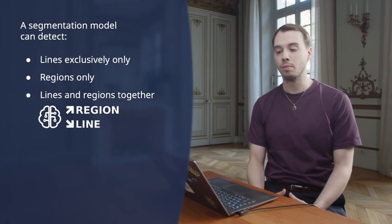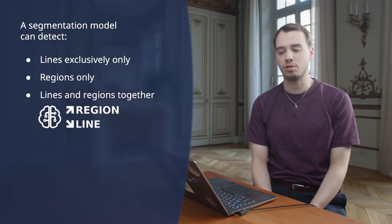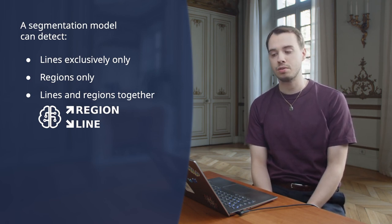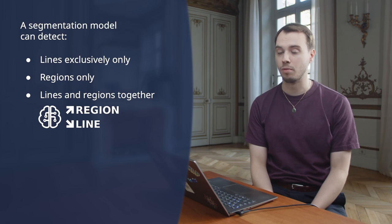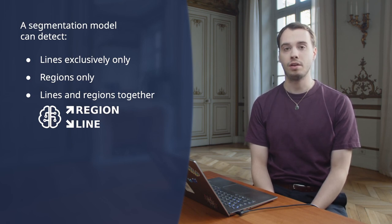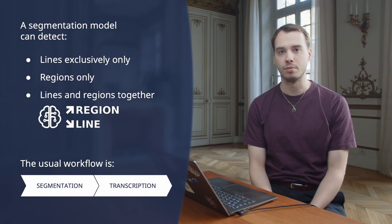Region segmentation and line segmentation are not mutually exclusive, nor do they need to be performed at the same time. Many segmentation models can do both at once, while some are trained to do only one. In fact, if you want to simply perform automatic text recognition, identifying the regions on the document is completely optional, while detecting text lines is mandatory for most transcription software. Segmentation-free systems already exist.